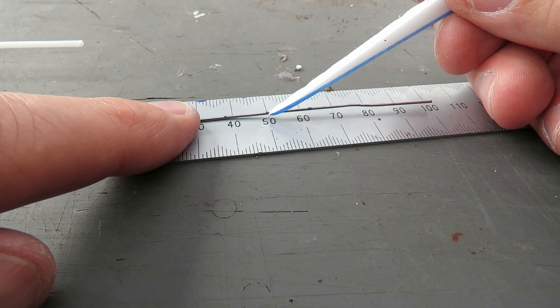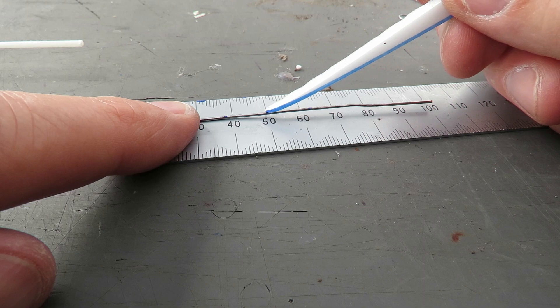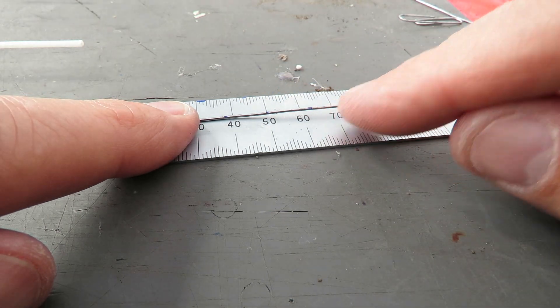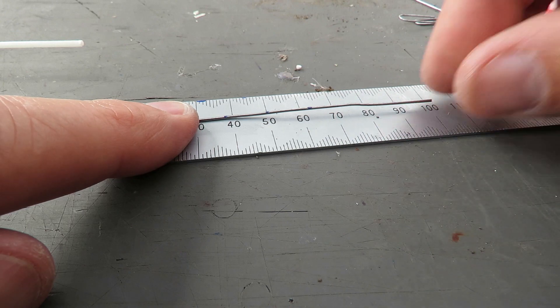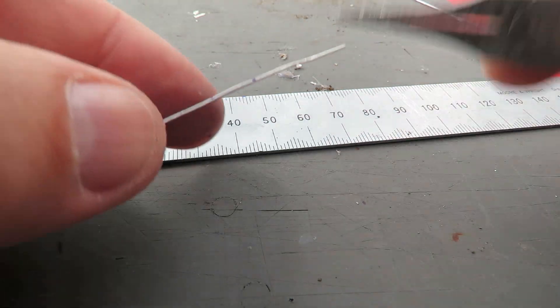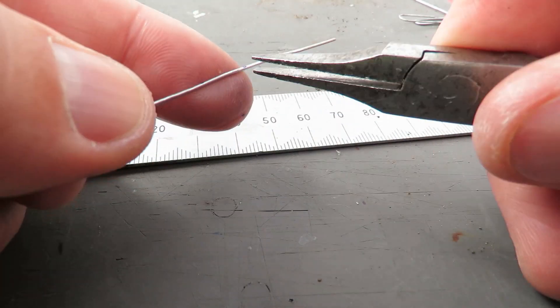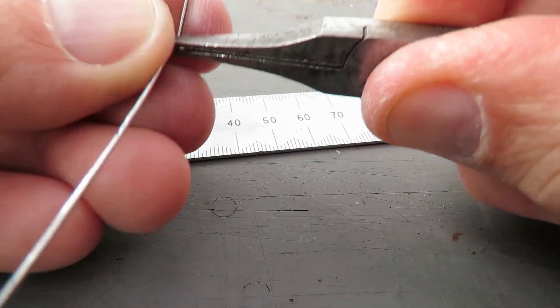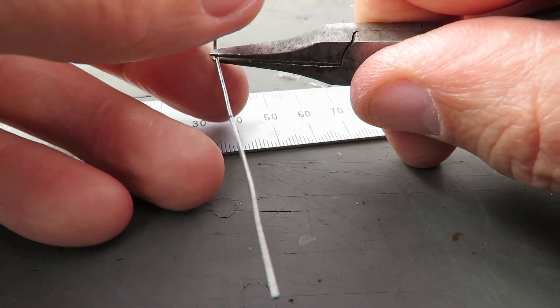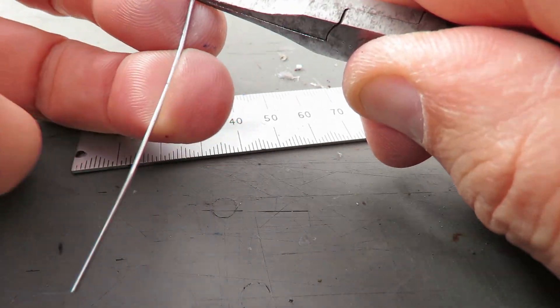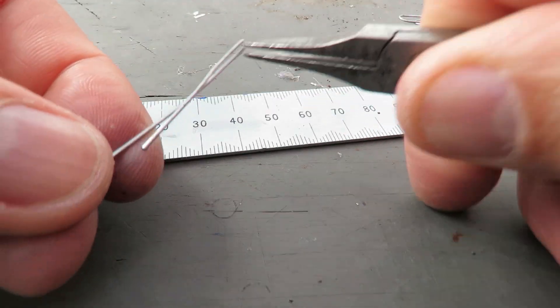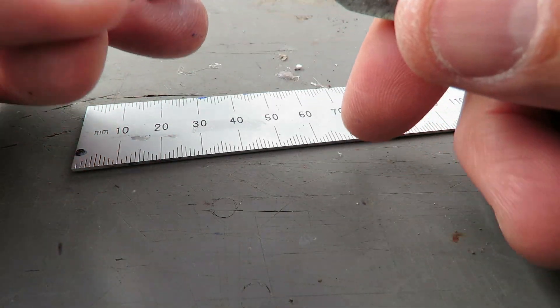Mark the center and I've also marked 12 millimeters either direction. I'm going to fold it. I'll just go on that mark there. Fold it right over and the same on the other mark.